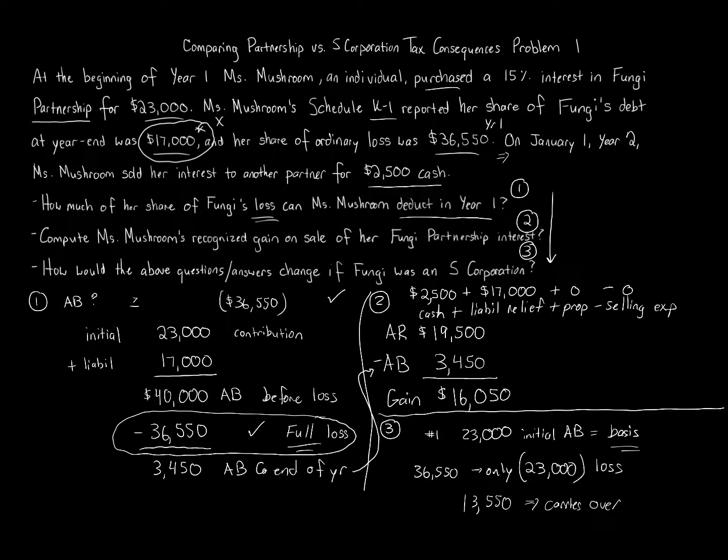It carries over to the future. That's what happened in year one, is you can only take $23,000 loss, not the full $36,550. How would, what would happen to the basis? And number two, you would still have, you wouldn't have a liability relief to worry about. It would be $2,500, you'd have a $2,500 gain.